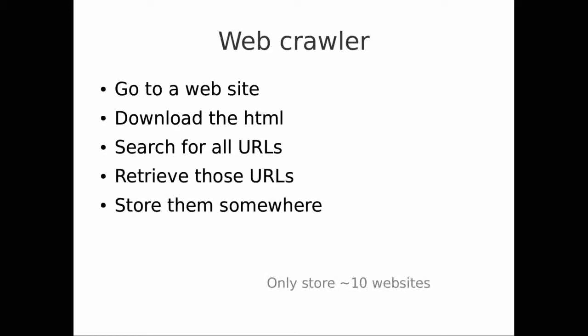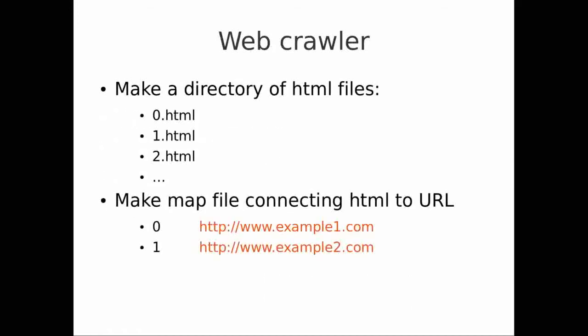If you want to play along at home, you can download as many websites as you have disk space for. We'll choose websites at random, and what we're going to write is a series of HTML files numbered 0.html, 1.html, 2.html and so on, and then a map file that contains the number and the original URL.